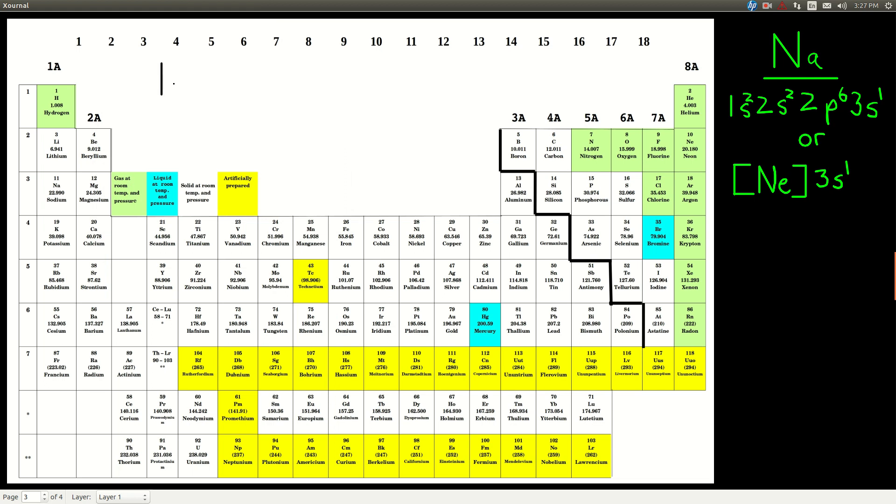we're past the 1S block, so we go 1S2, we're past the 2S block, so we'd say 2S2, we're past the 2P block, so we'd say 2P6, then we're past the 3S block, so we'd say 3S2, all right, so we're here, then we're past the 3P block, argon, so we'd say 3P6, and then we're past the 4S block, we're past calcium because we're right here, right,